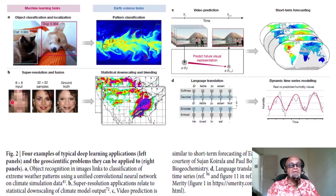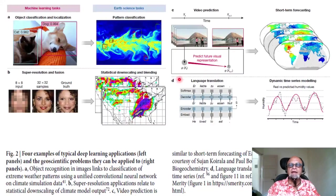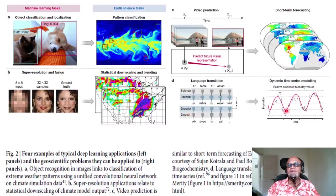We are looking at an image with 8x8 input, 32x32 samples, and the ground truth. The caption reads: four examples of typical deep learning applications in the left panels, and the geoscientific problems they can be applied to in the right panels. The figure has panels A, B, C, and D, which need to be read in order.